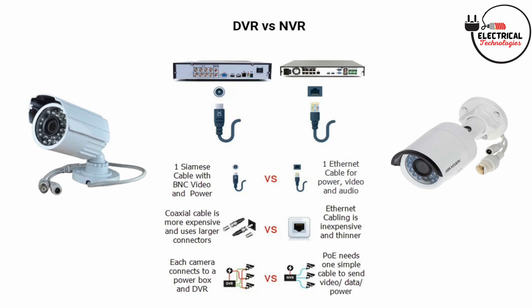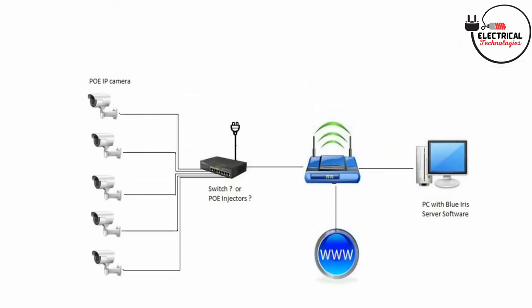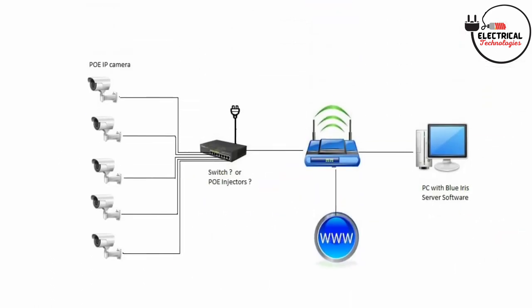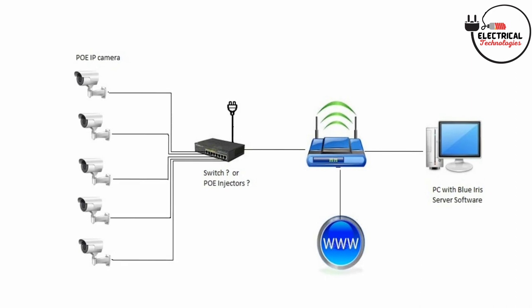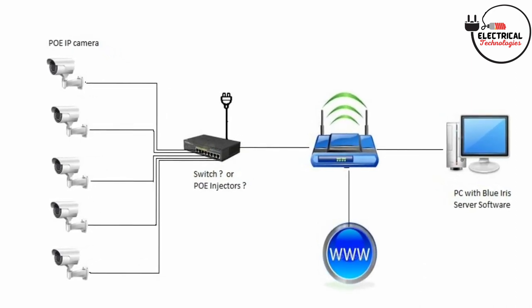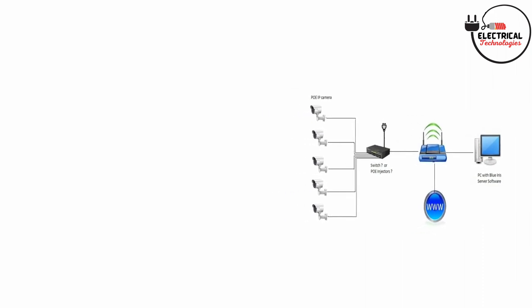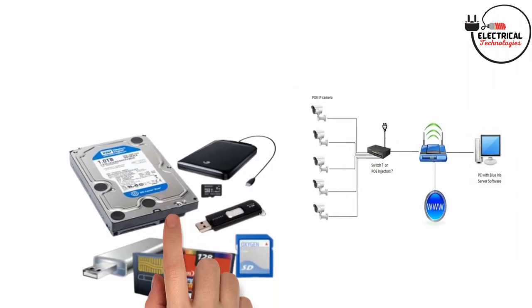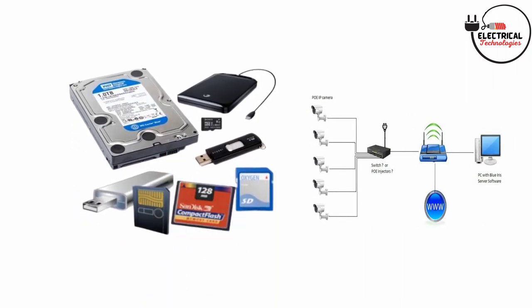Most importantly, a DVR-based surveillance system is a wired security system, while an NVR system can be either wired or wireless. NVR system basics, components, and benefits: NVR is a network-attached computer system that includes a software program for recording video in a digital format to storage devices such as a disk drive, USB flash drive, SD memory card, and many more.